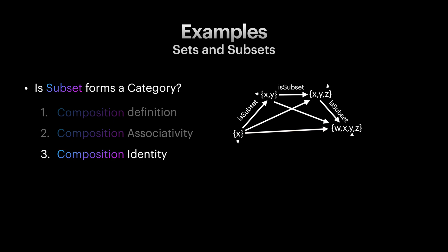And finally, we already know every set is a subset of itself. So we have an identity arrow for each object. All the composition rules are valid. So it seems that we got ourselves a category here.